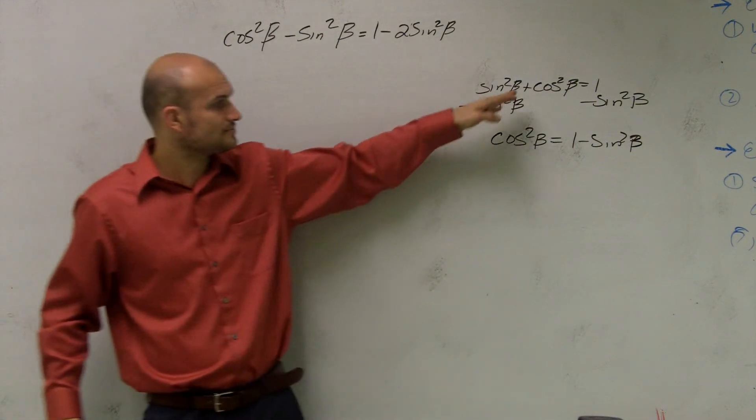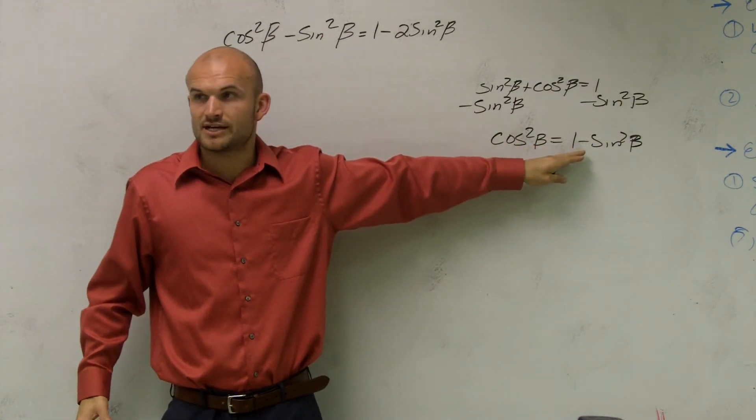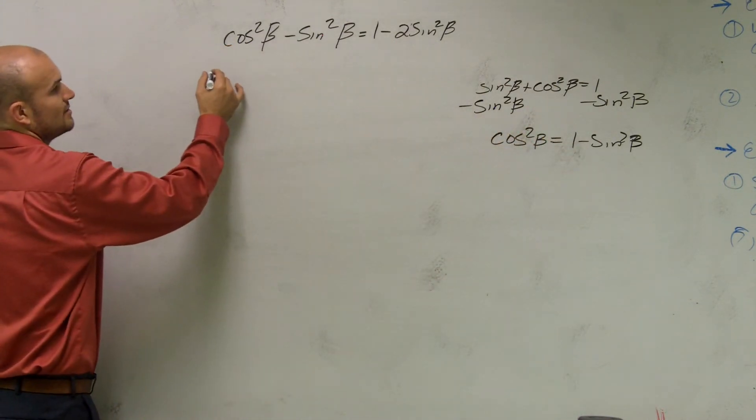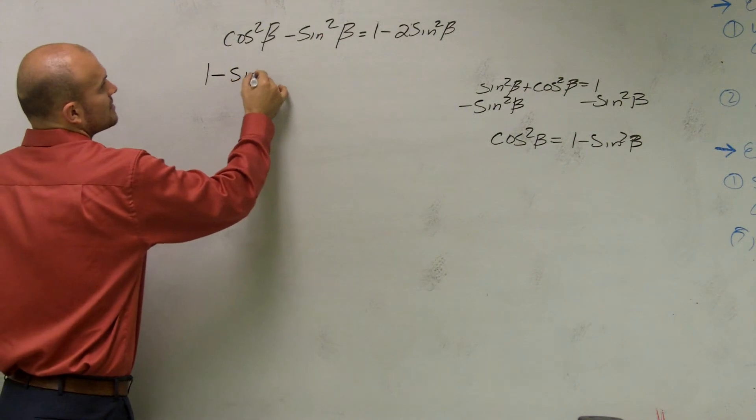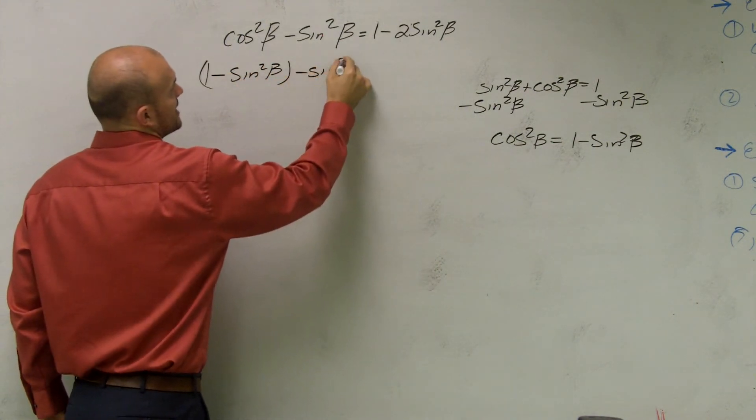See, I rewrote the cosine squared so it equals something by using that trig identity. So now I can write this in. I write 1 minus sine squared beta minus sine squared beta.